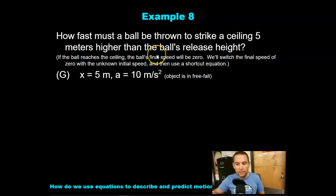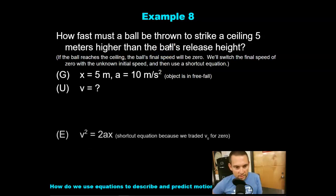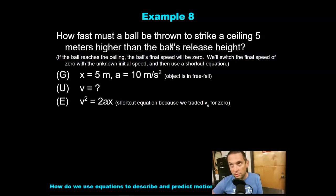So we have the position x equals 5 meters, acceleration equals 10 meters per second. Because the object's in free fall, gravity is the only force acting on this thing. The unknown variable will be the initial velocity, or in this case, the final velocity, because we're going to say the initial velocity is 0. So we can use the shortcut equation.